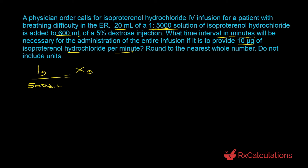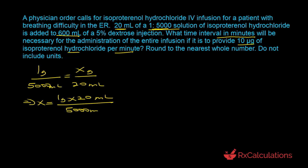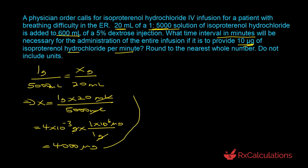We solve for x: x = 1 gram × 20 milliliters ÷ 5,000 milliliters. The milliliters cancel out, giving 4×10⁻³ grams. We convert to micrograms using 1 gram equals 1×10⁶ micrograms; the grams cancel out and we get 4,000 micrograms.